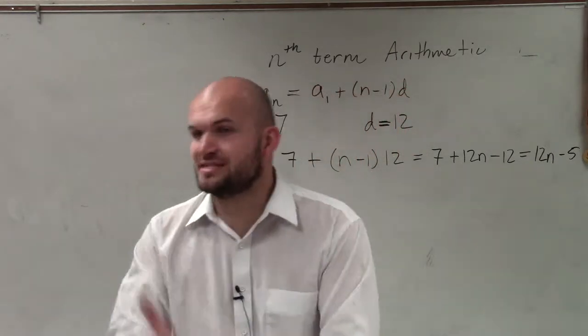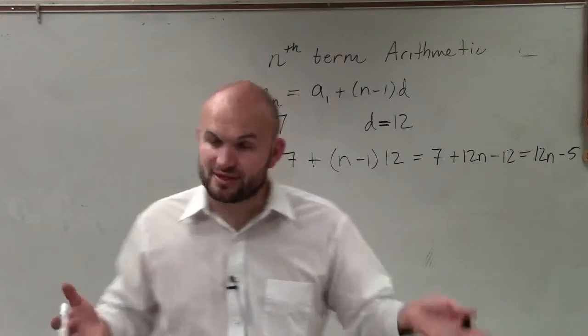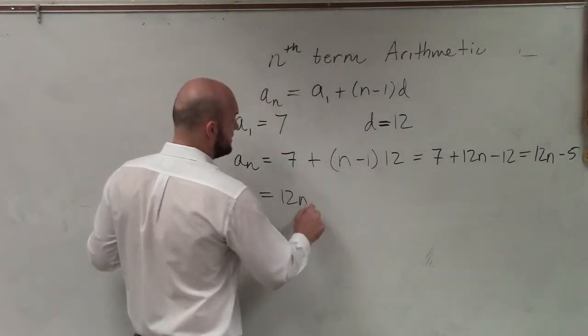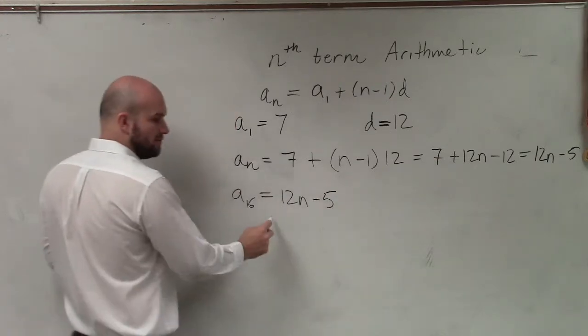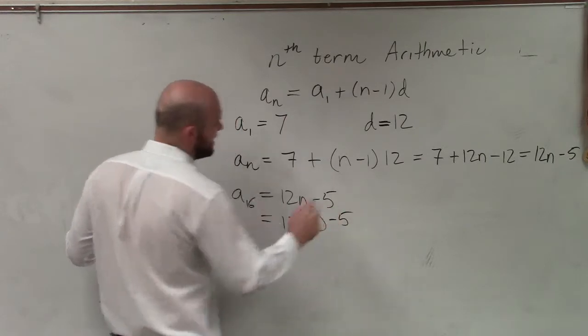Because if I ask you to find a sub 16, I want you guys to be able to understand that you can apply that formula to everything. So now when I have a sub 16, I use 12n minus 5. Well, to evaluate for a sub 16, I'm just going to plug in 12 times 16 minus 5,